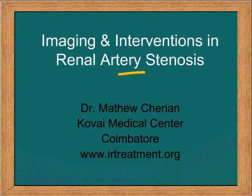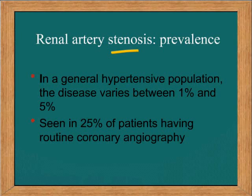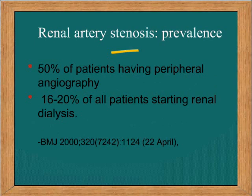Imaging and Interventions in Renal Artery Stenosis. In a general hypertensive population, renal artery stenosis would be seen in 1-5% of patients. It is seen in 25% of patients who have routine coronary angiography, in 50% of patients who have peripheral angiography, and in 16-20% of patients who are undergoing renal dialysis.